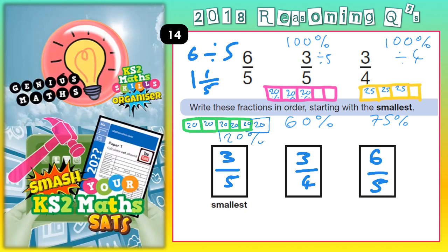Well, 6 fifths means 6 divided by 5, so that's 6 divided by 5. 3 fifths means 3 divided by 5, so that's 5s into 3, like that. And 3 quarters means 3 divided by 4, so how many 4s go into 3? Now if we work these out, we'd have them all in decimals.